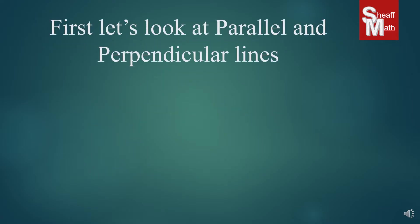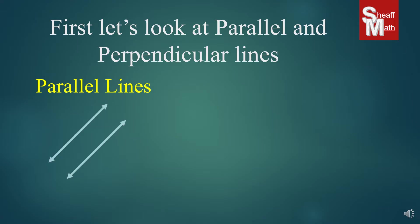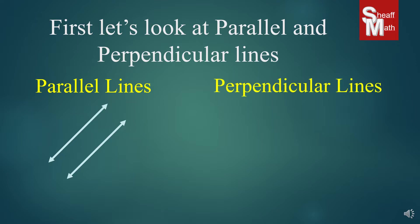The first thing we're going to do is look at what parallel and perpendicular lines are, just as a little recap. Parallel lines look like this — they are going in the same direction, they never cross each other, and they are the same distance at every point from each other. Perpendicular lines, on the other hand, are kind of like opposite: they cross each other at a 90-degree angle.